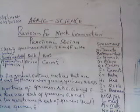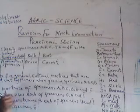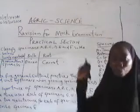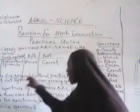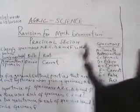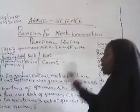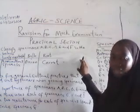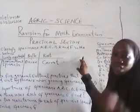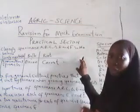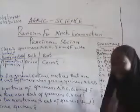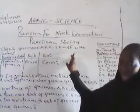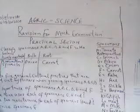Going to question 1B — some of you also made an error there. Practical questions are very easy to get marks, but first understand what the question wants from you. This question asks for five general cultural practices common to all the crops classified in question one. Those general cultural practices include weeding, fertilizer application, shading, watering, control of pests, and control of diseases. Some of you mentioned staking — staking is a cultural practice, but it is not a general cultural practice for all these crops. Understand the question very well before you begin to answer.